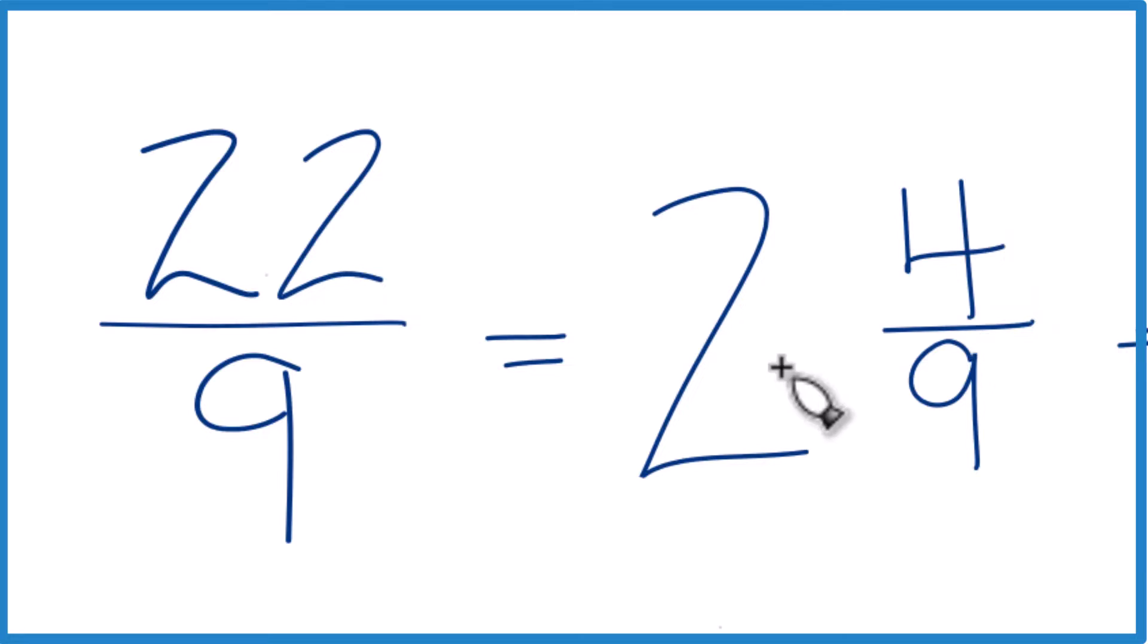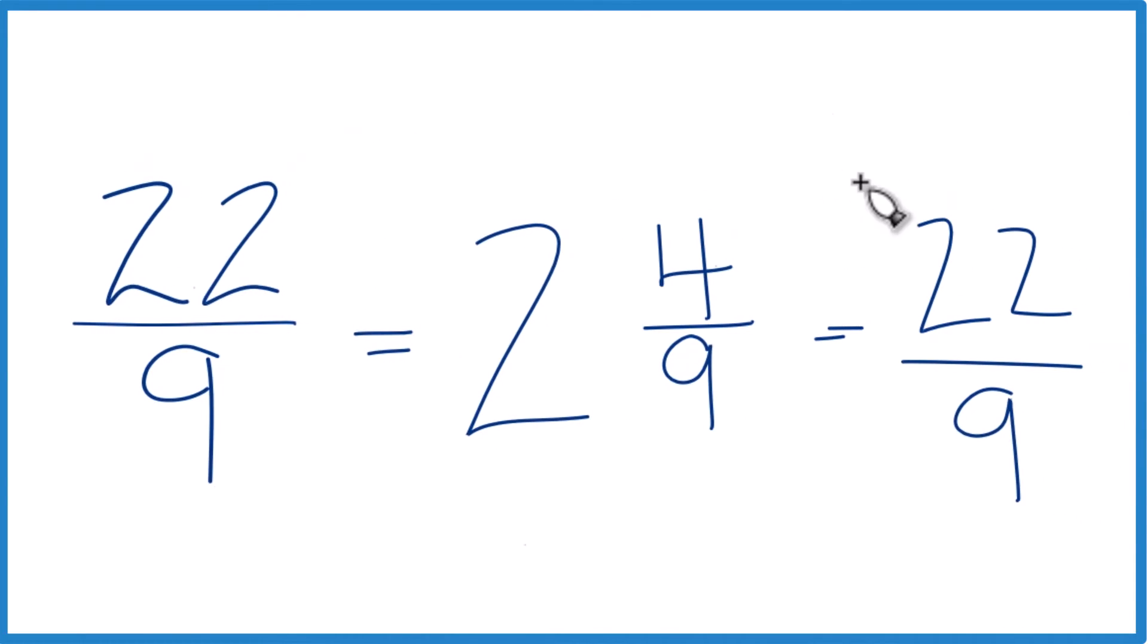2 times 9, that's 18, 18 plus 4, that's the 22, and that's all over 9. This is what we started with. So that's it. That's how you convert 22 ninths to a mixed number. The answer, 2 and 4 ninths. Thanks for watchin'.